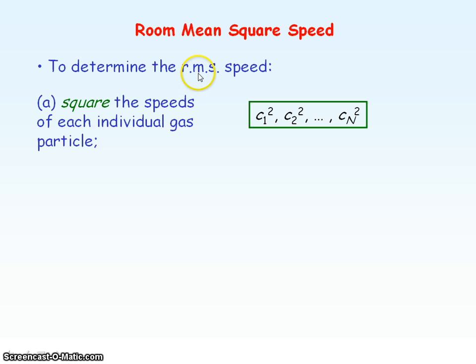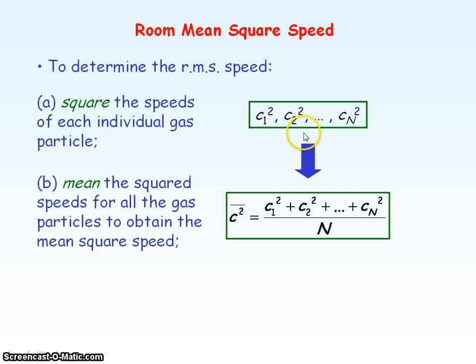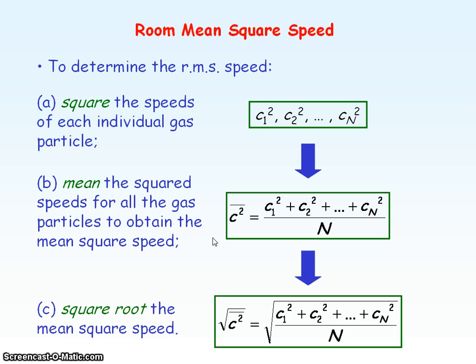The next step is to take the mean, the average of the square speeds for all the gas particles, and this term is called the mean square speed. And then finally to get the RMS speed, we square root the mean square speed.